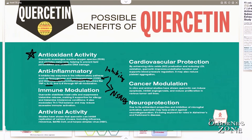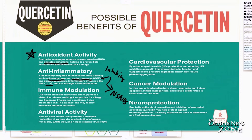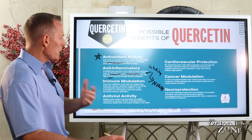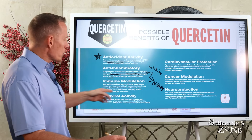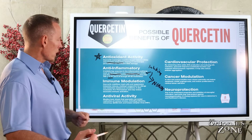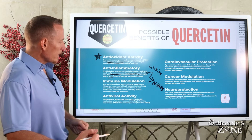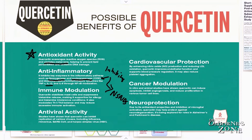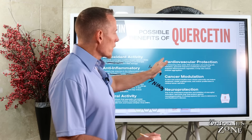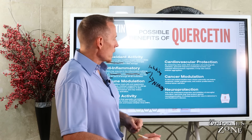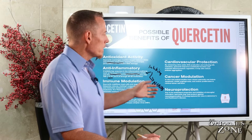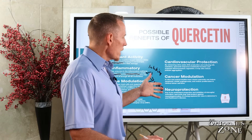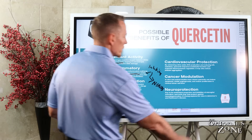It also down-regulates pro-inflammatory chemicals like TNF-alpha, interleukin-1-beta, and interleukin-6. It has immune modulation functions — it stabilizes mast cells. Those of you with histamine problems, hyperallergy problems, or mast cell activation syndrome will want to pay attention to the immune modulatory effects of quercetin. It has antiviral and antibacterial activities, so it's an antimicrobial. It also has cardiovascular protection, and research shows its effects on blood pressure and triglycerides. We know it has anti-cancer effects and neuroprotective impact.